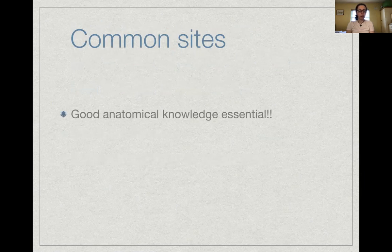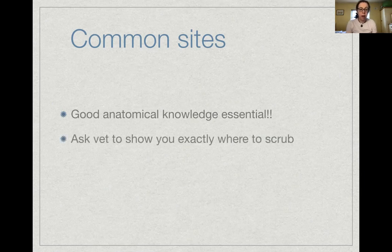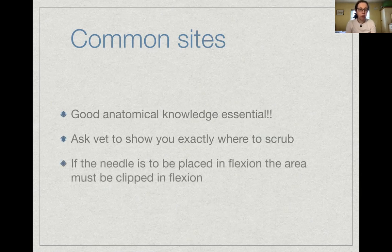Knowing your distal limb anatomy is critical since most lameness occurs there. Clip and prepare the skin precisely over the structure where you want to deposit the local anesthetic. If unsure where to scrub, ask the vet in advance. Importantly, if the needle is to be placed with the limb in flexion, you must clip and scrub the area while the limb is in that position; otherwise the clipped patch will be displaced from your target site.